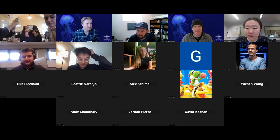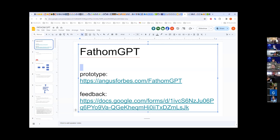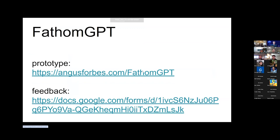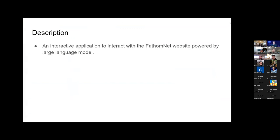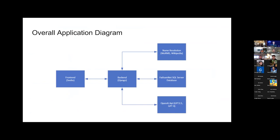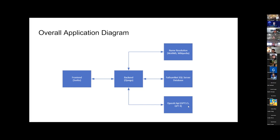You should be able to share screen. Can everyone see my screen? So our application is a tool that allows users to interact with FathomNet — the data from FathomNet — using a large language model, so that they can use a natural language prompt. The overall implementation has a front end that takes a user prompt and passes it into the back end, which consists of various components. There is the name resolution component using WoRMS and Wikipedia data, and a scale database with images from FathomNet. We also use the OpenAI API to understand user natural language prompts and determine which functions to call.